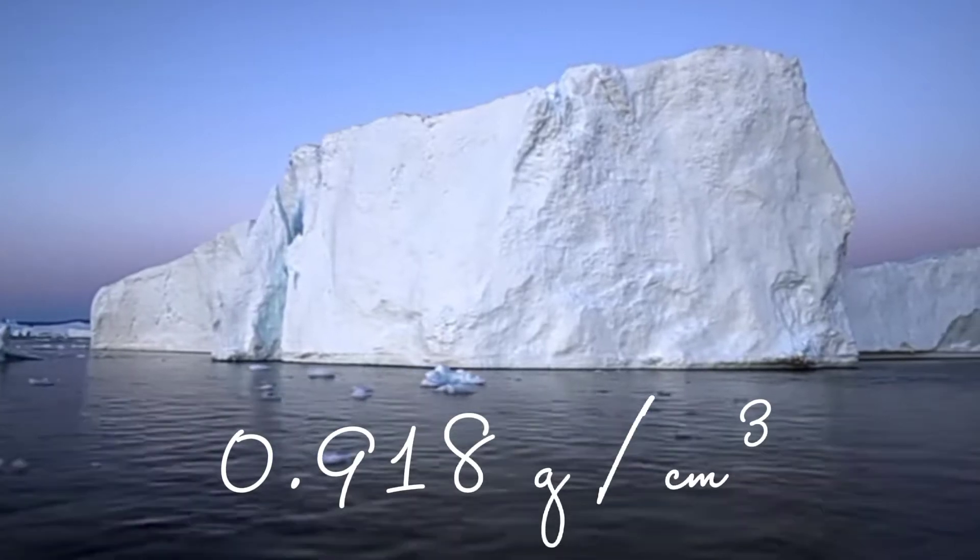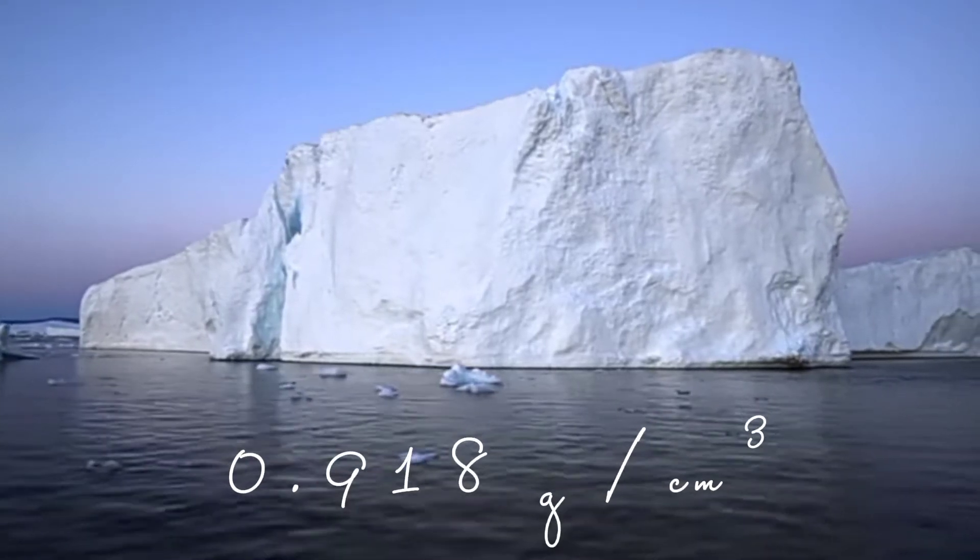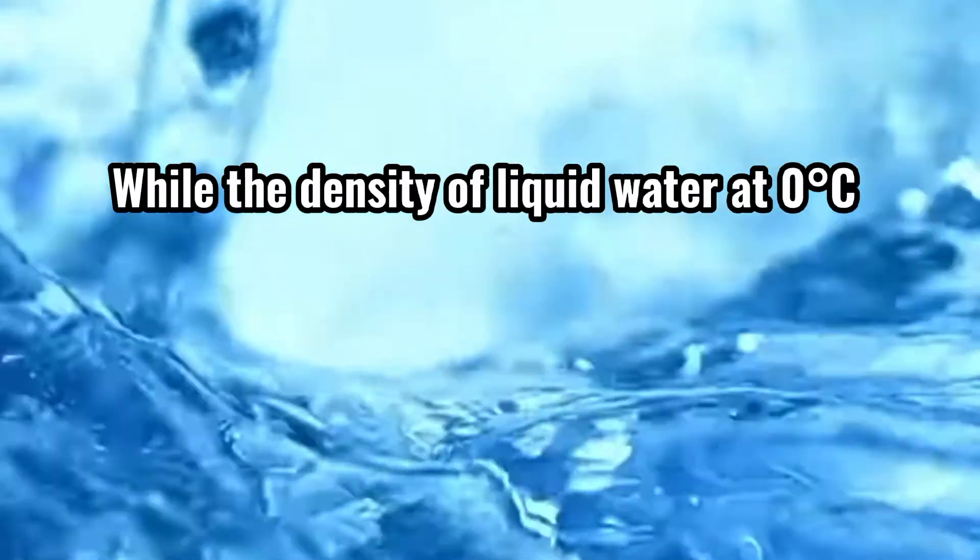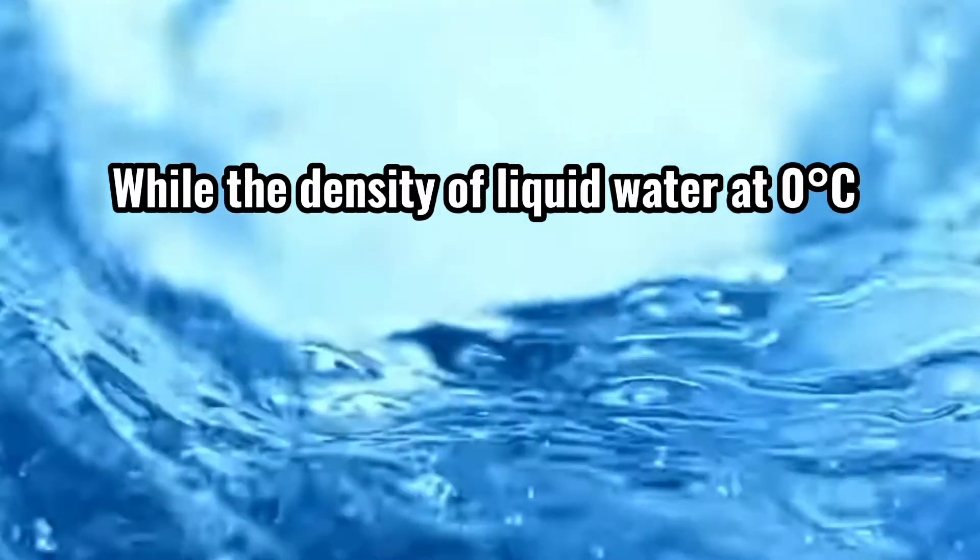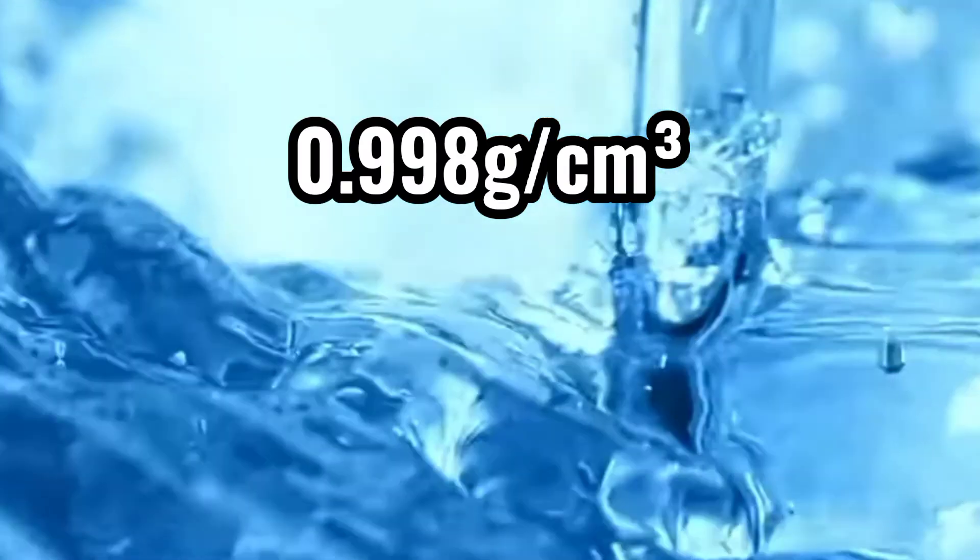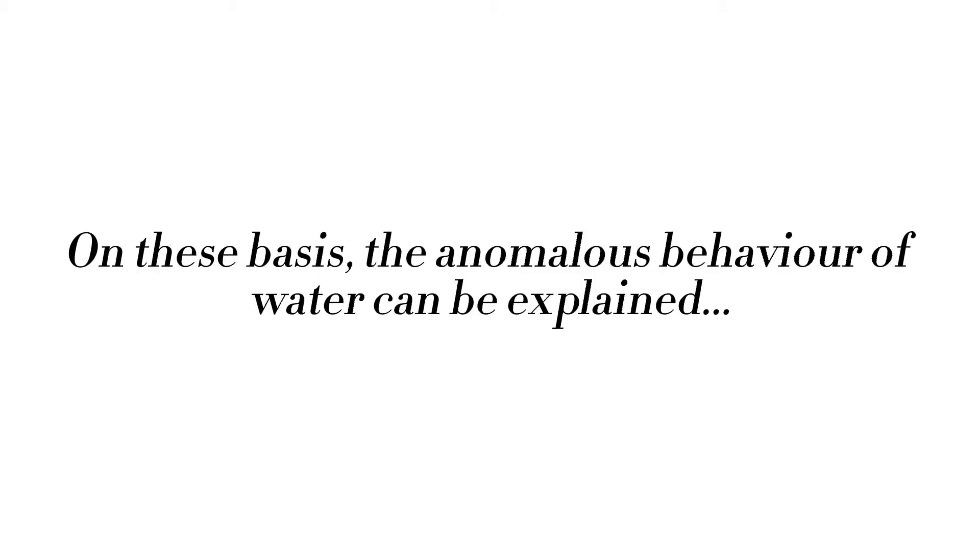While the density of liquid water at 0 degree centigrade is 0.998 gram per centimeter cube. On these bases, the anomalous behavior of water can be explained: that is, water when heated from 0 to 4 degrees centigrade shows contraction instead of expansion.